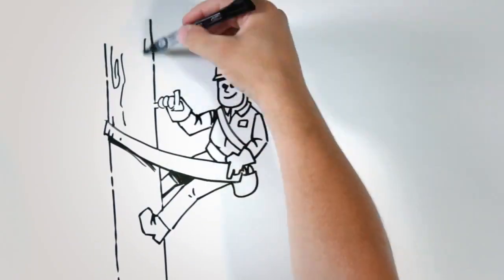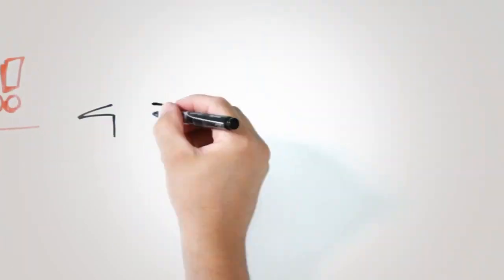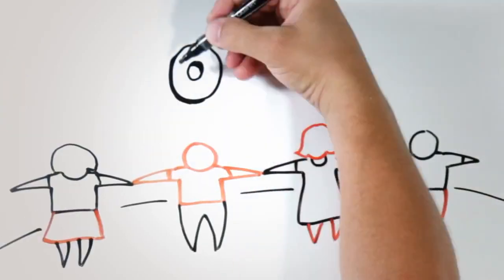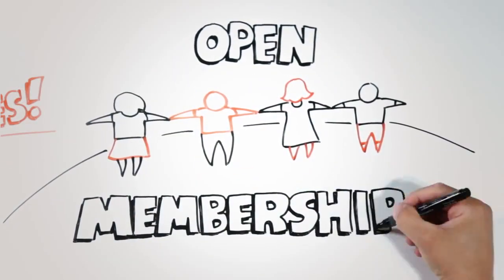Co-ops exist only to serve their members. They have a unique set of cooperative principles. All may join, regardless of race or gender or creed. That's the first principle of cooperatives: voluntary and open membership.